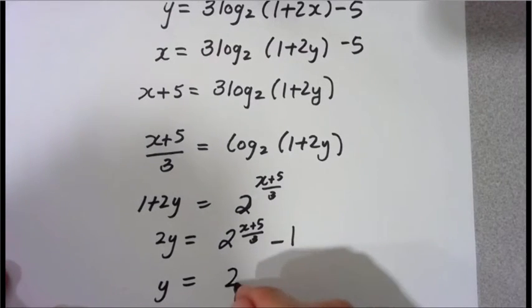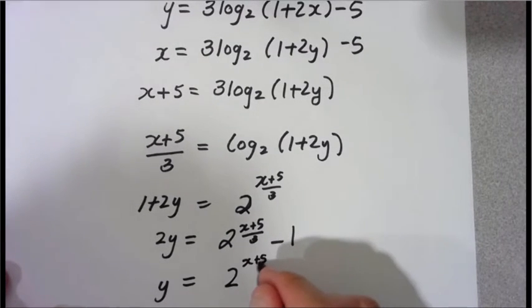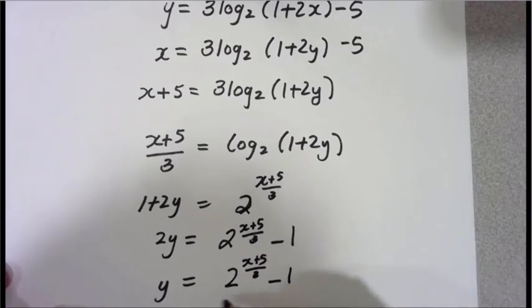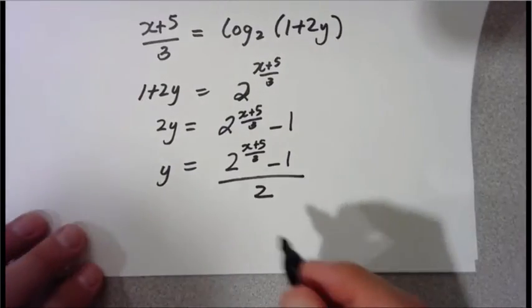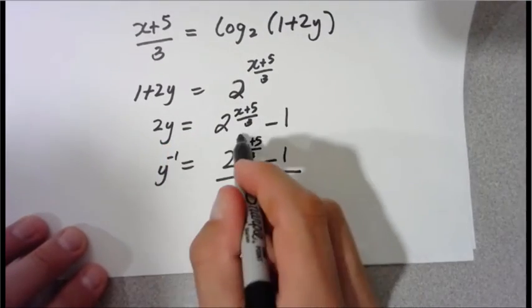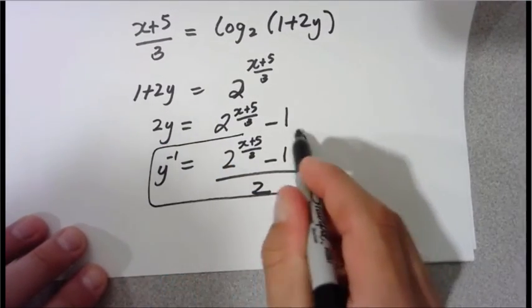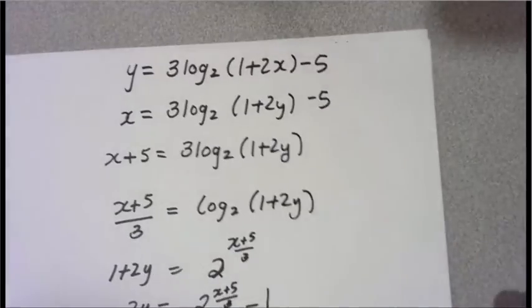So you have y equals two to the x plus five all over three minus one, that whole thing divided by two. And there is your inverse. So is this y equals? So I can just go ahead and do this. I'm going to put the inverse there. There's y inverse of x.